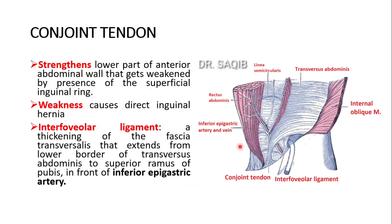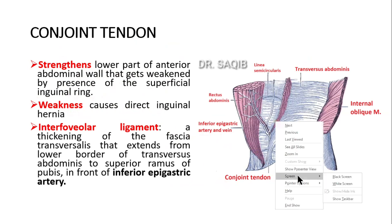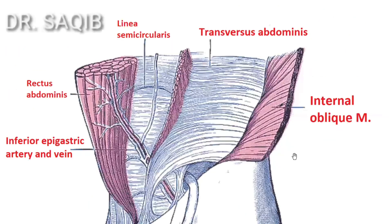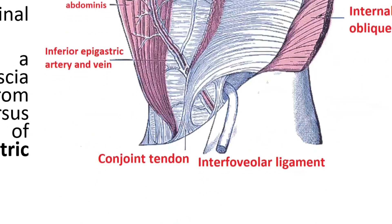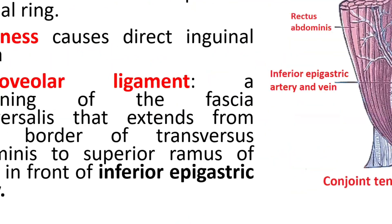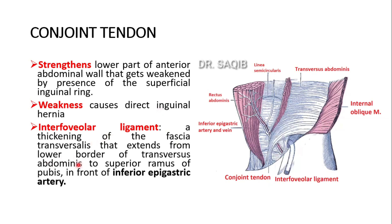The interfabular ligament is a very important structure. Here you can see the interfabular ligament — let me enlarge and zoom in so you can see it clearly. It is a thickening of the fascia transversalis that extends from the lower border of the transverse abdominus to the superior ramus of the pubis, in front of the inferior epigastric vessels.